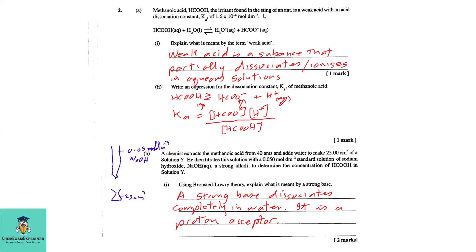Part 2a: Methanoic acid, the irritant found in the sting of an ant, is a weak acid with an acid dissociation constant Ka of 1.6 × 10⁻⁴ mol/dm³. Examine the equation. Part 1: Explain what is meant by the term weak acid.